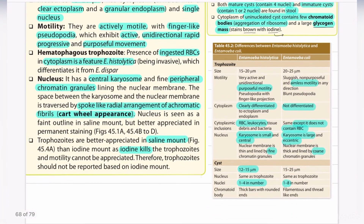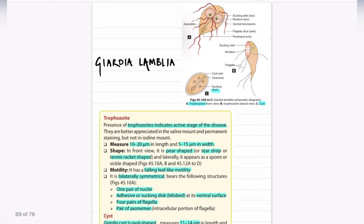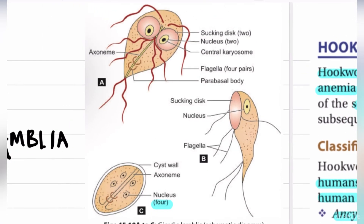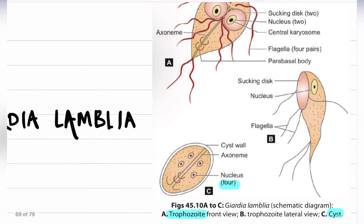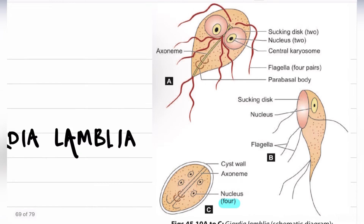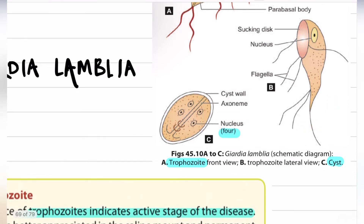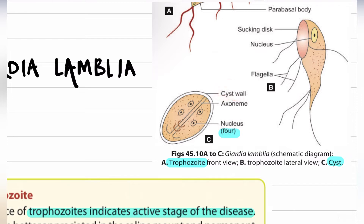Next, we are going to discuss about Giardia lamblia. Giardia lamblia has a trophozoite and a cyst. The trophozoite is characteristically seen with two sucking discs, two nuclei with a central karyosome within each nucleus, and four pairs of flagella and parabasal bodies. This is the side view of the trophozoite.